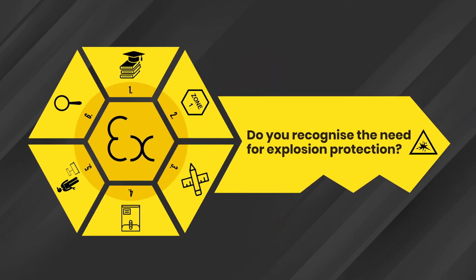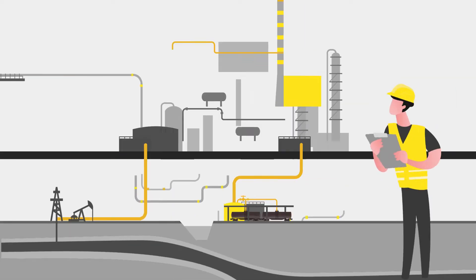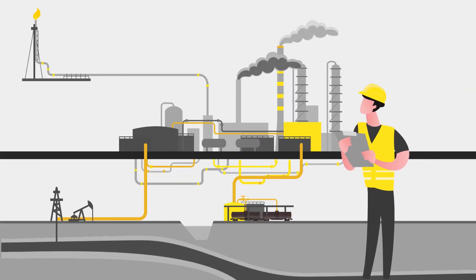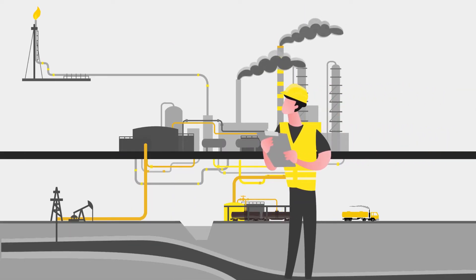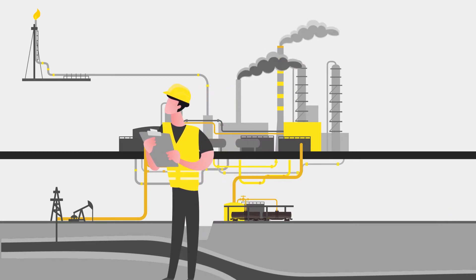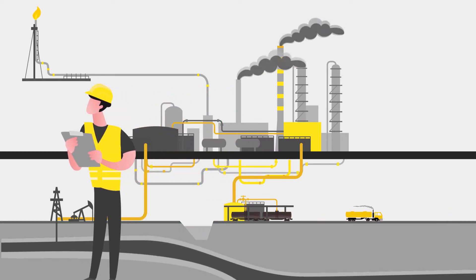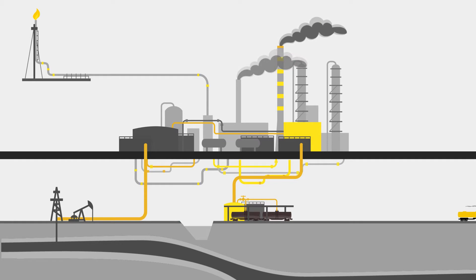Step two to a compliant EX lifecycle for hazardous areas is to understand where any potentially explosive atmospheres could occur. UTEX can create hazardous area classifications to ensure they represent the actual risk presented in your workplace, and with this, ensure safety for all staff during operations in potentially explosive atmospheres.